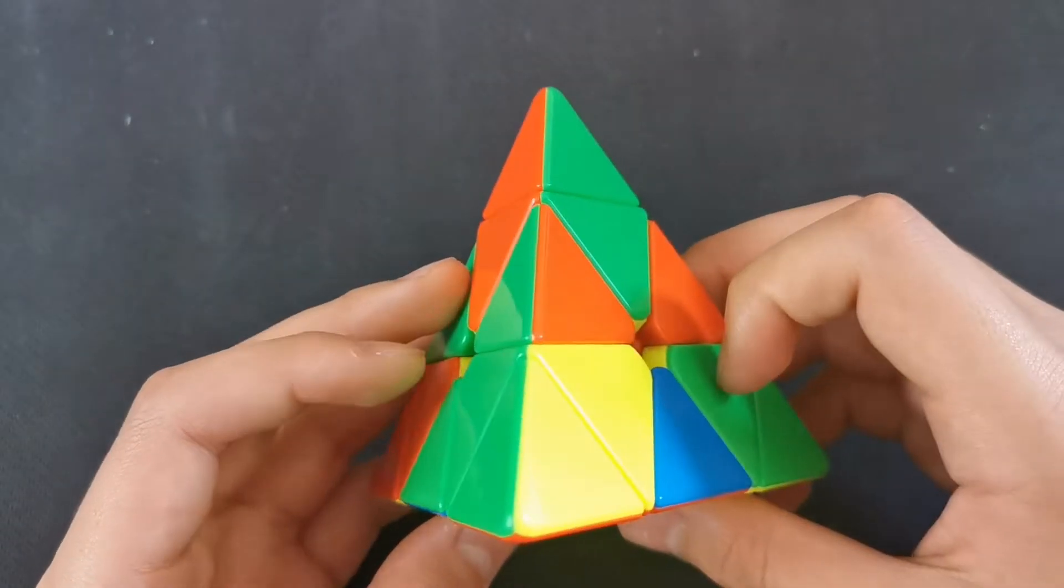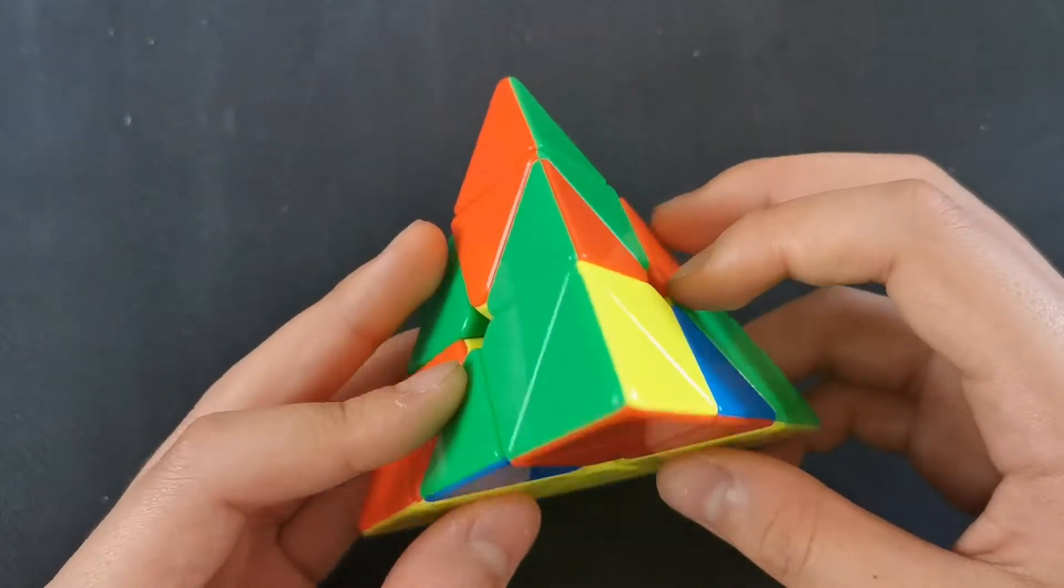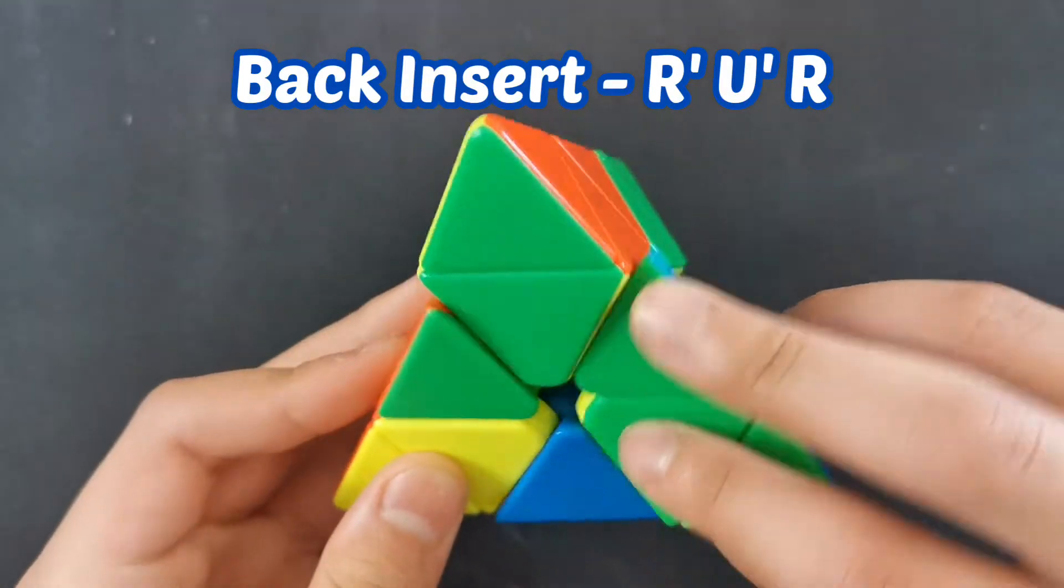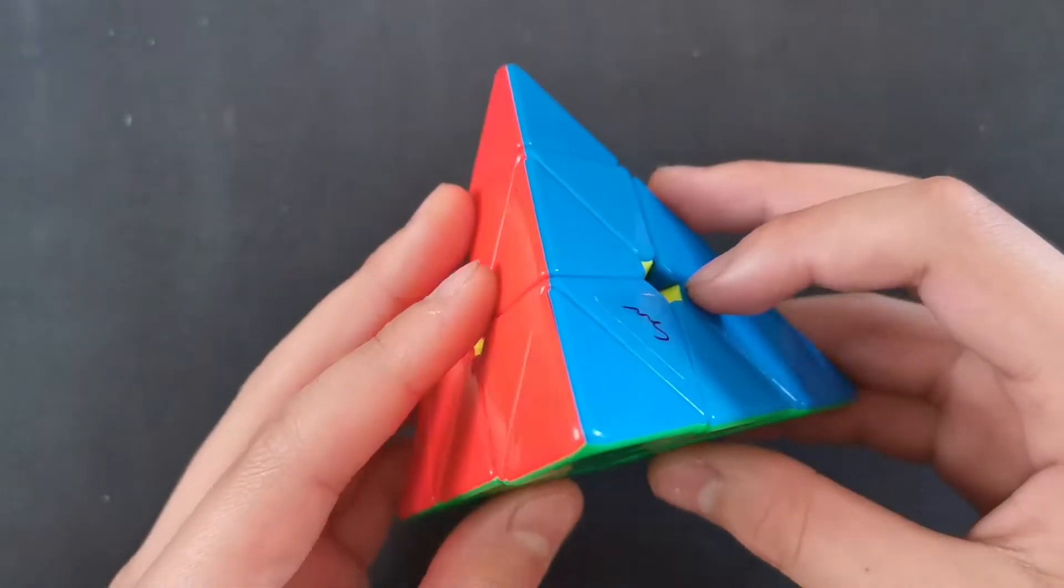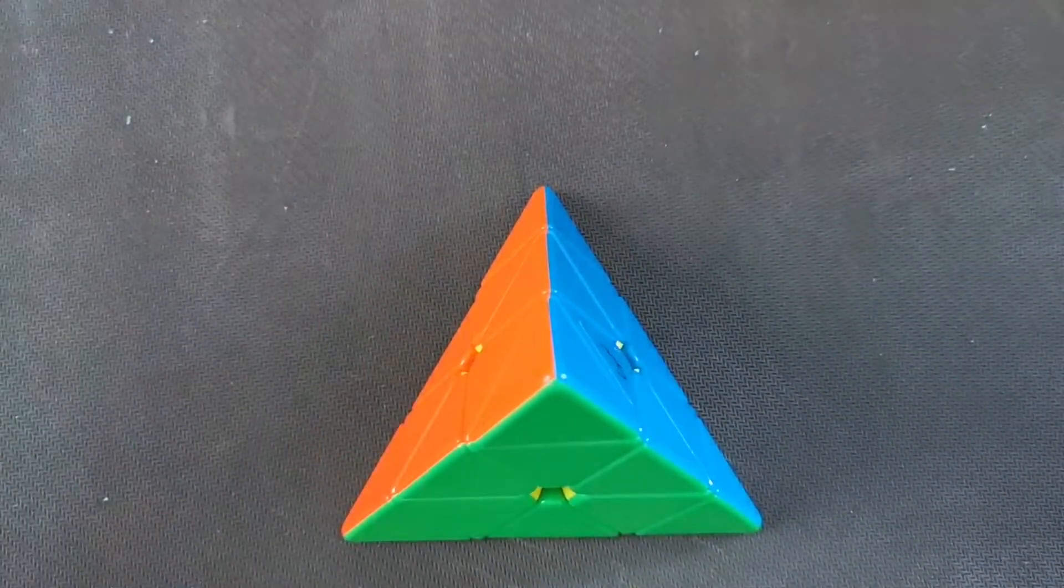And I'll probably do the back tip, solve this into the back with R' U' R, rotate, and then you get an L3. Yeah, so your solution for that wasn't that bad.